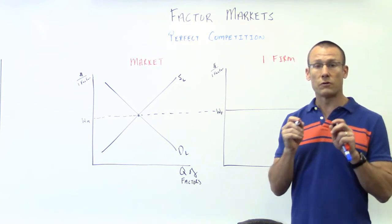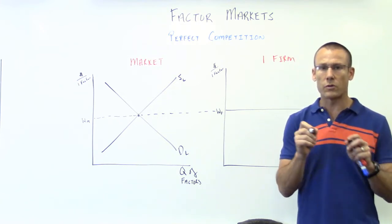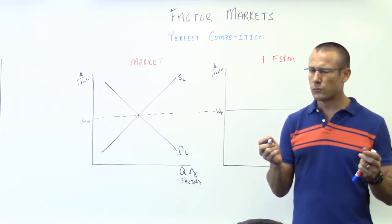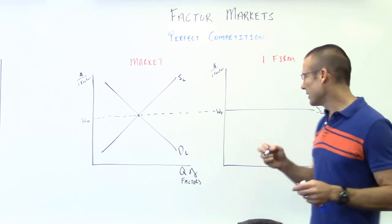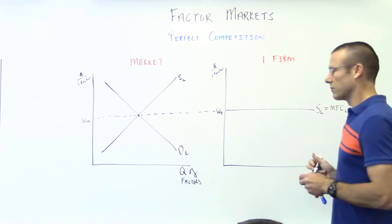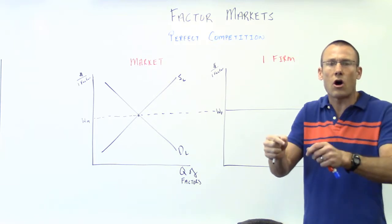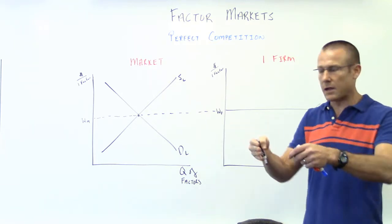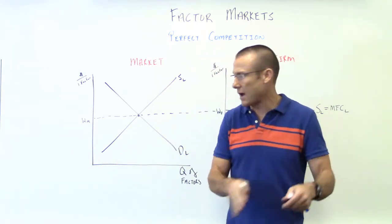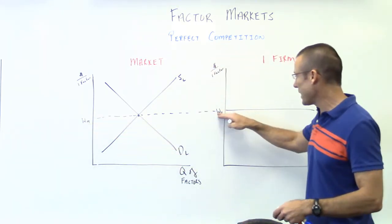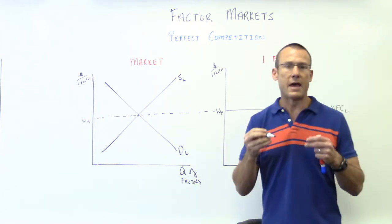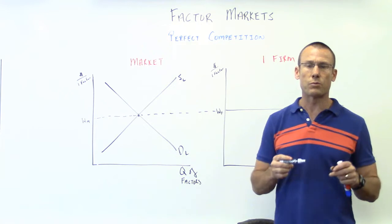Now, is this the marginal factor cost of labor or the marginal revenue product of labor? Think about that for a second. Should make a lot of sense. It's the marginal factor cost of labor. It's how much it's going to cost the firm to hire another laborer. What's it going to cost the firm to hire another laborer or to give another laboring hour? It's going to be the wage market. The wage is the marginal factor cost of labor.